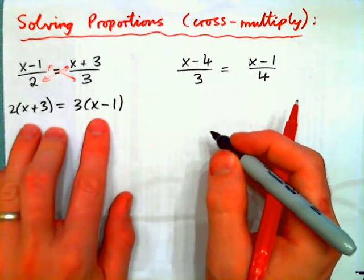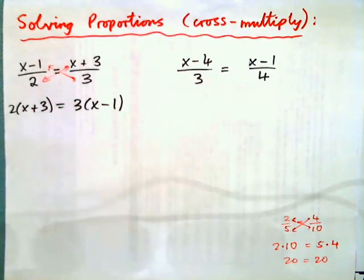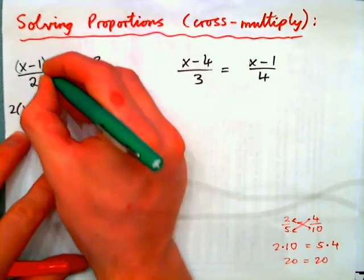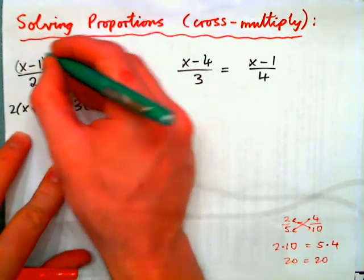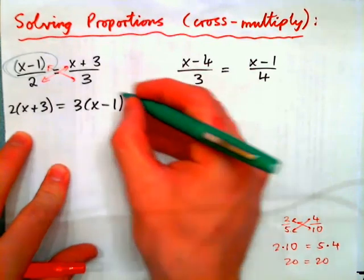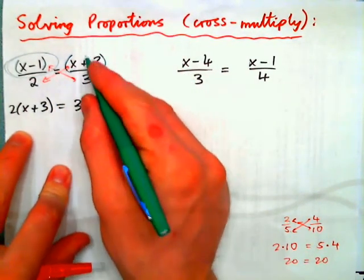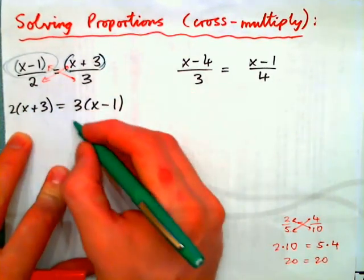Where did the parentheses come from? Question. Well, let's think about it, it's very important. This whole thing is being divided by 2. If I go 3 times the top, I need to multiply 3 times the whole top, like that. This whole thing is being divided by 3. So if I multiply 2 times that, I must multiply 2 times the whole thing. And so that is why I need parentheses.